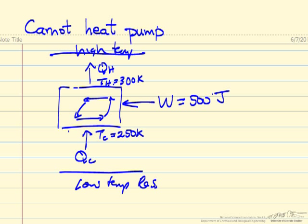In this case we're going to run the cycle so that the low temperature in the cycle is 250 and the high temperature is 300, and we're assuming we added 500 joules.